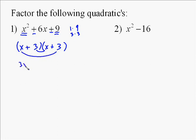And so in this one, you're going to have 3x plus 3x, which equals 6x, which is what we needed. And so we end up with x plus 3 times x plus 3.